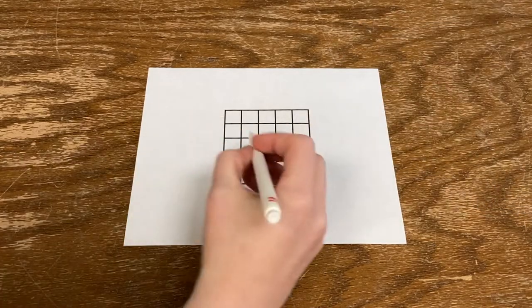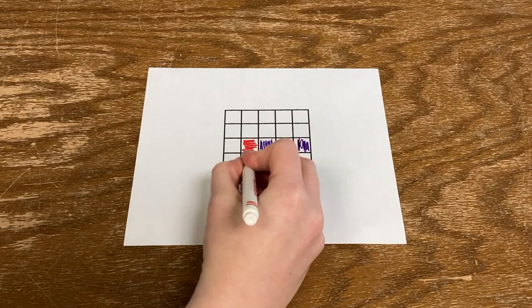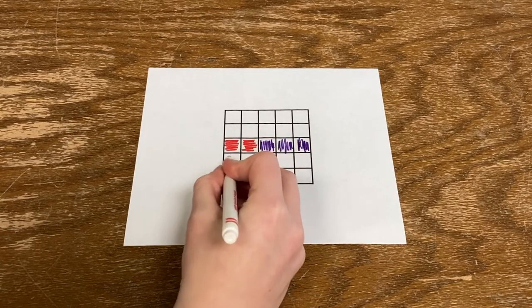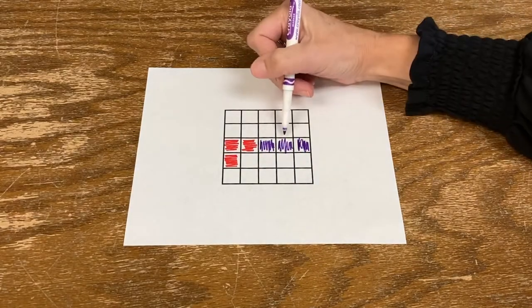Continue to take turns coloring in Trominoes until one player can't fit one on the grid. The last player able to draw a complete Trominoe wins.